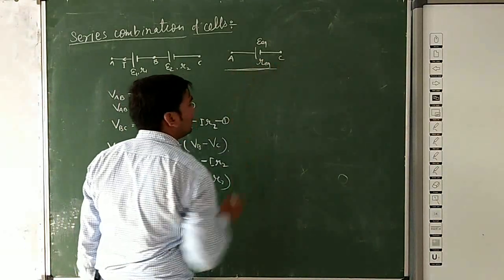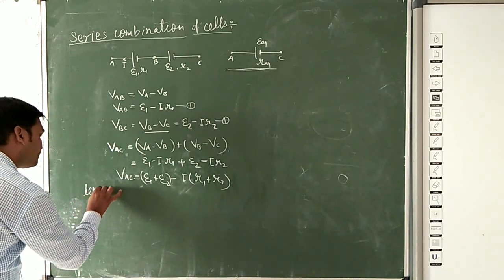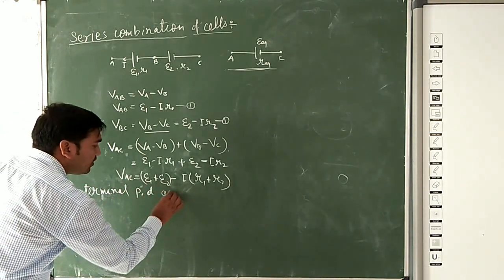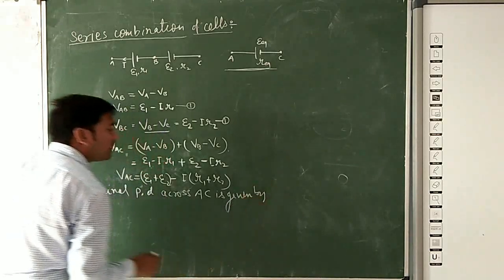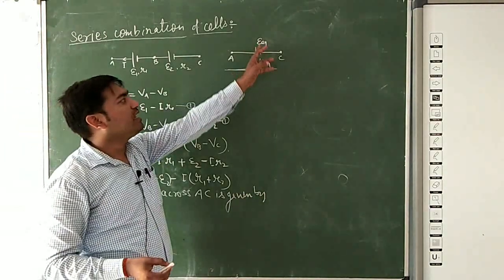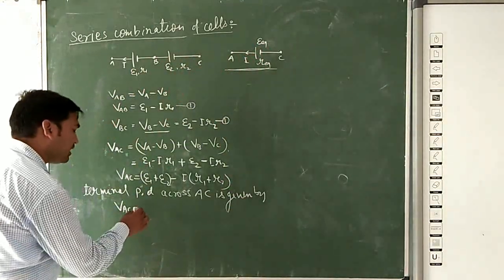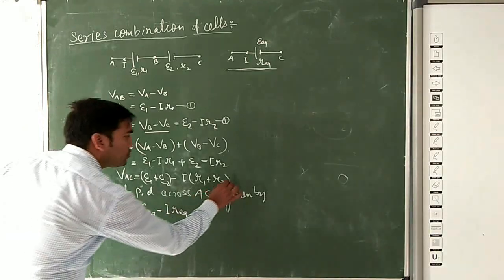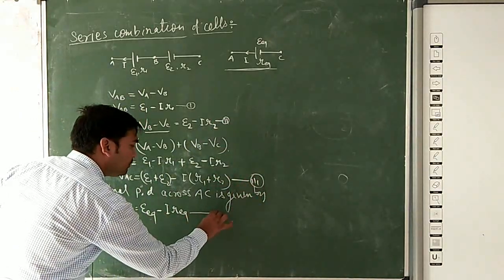Now, if we write this according to the equivalent cell formula V equals E minus IR, since both cells are combined the current remains I. For the equivalent combination, VAC equals E_equivalent minus I·R_equivalent. We call this equation number 3, and the previous result equation number 4.